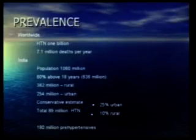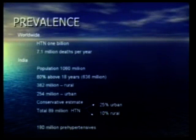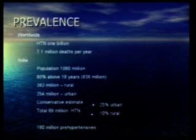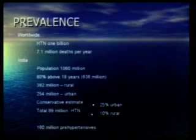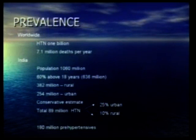When we say that hypertension is a very common problem, let us dwell upon how common it is worldwide. The worldwide prevalence of hypertension is about one billion — one billion of the total world population is suffering from hypertension. About 7.1 million deaths occur due to hypertension each year. When we talk of India, our population is around 1,080 million, and 60 percent of people above 18 years are liable to develop hypertension, which works out to around 36 million people, of which 362 million are in rural population and 254 million are in urban.